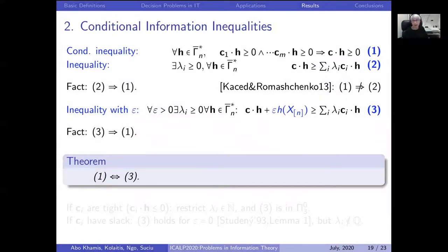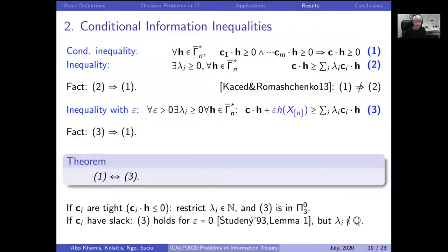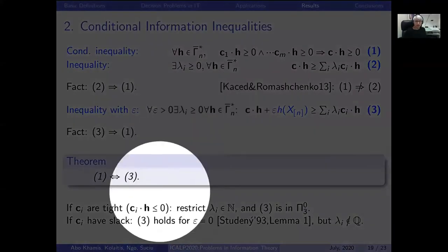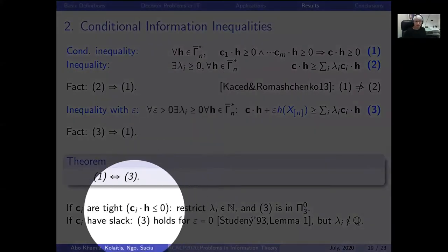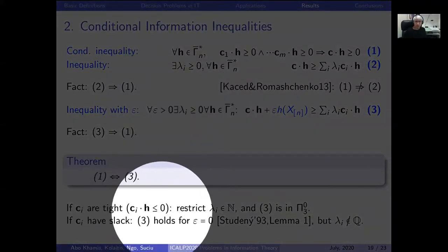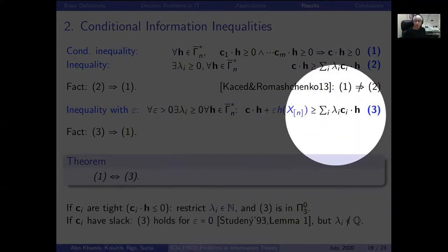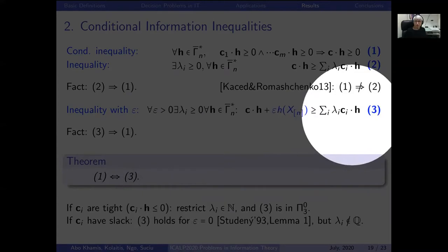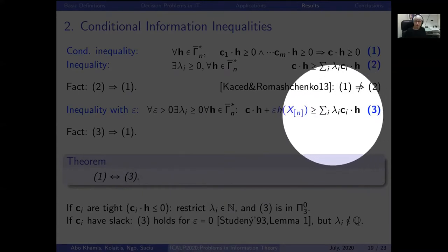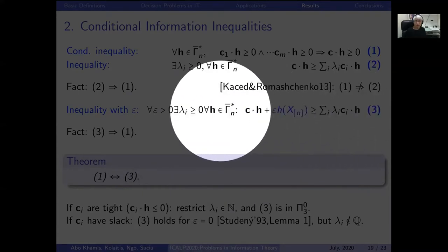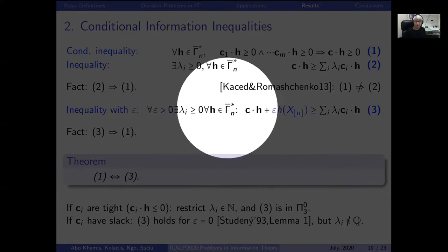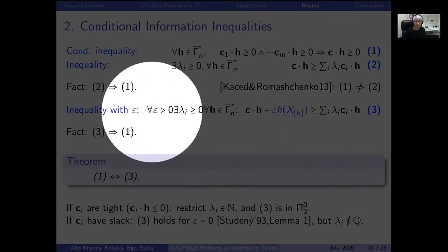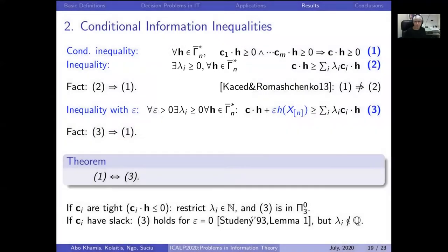If in addition all preconditions are tight — meaning the inequality in the opposite direction is valid — we can further increase the λ's because those terms are always ≤ 0, allowing us to make them natural numbers. This places the problem in Π₃ because it is an alternation of ∀, ∃, and ∀.